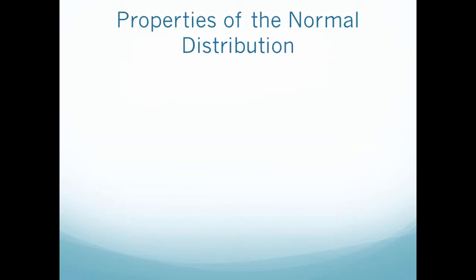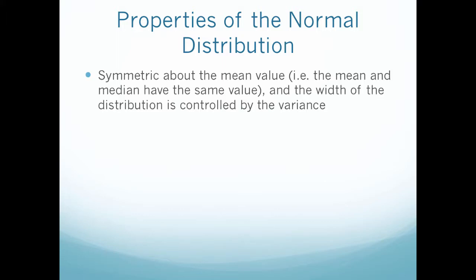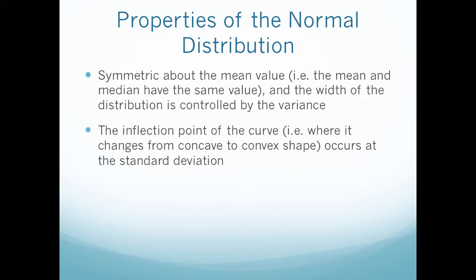The normal distribution is an approximate representation of the typical behavior that is often observed under randomized conditions. It's also one of the most important distributions for several reasons in probability. The shape of the normal distribution is symmetric about the mean value. In other words, the mean and the median have the same value. And the width of the distribution is controlled by the variance. The inflection point of the curve, or where it changes from concave to convex, occurs at the standard deviation.